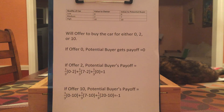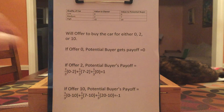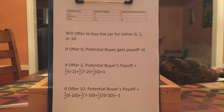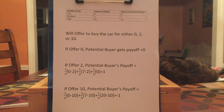So what the potential buyer should do is offer to buy the car for two, and that will be accepted two thirds of the time. That means if the car is of high quality, it won't be sold. This often happens when you have adverse selection — the parties don't trade if it turns out the good is of high value.